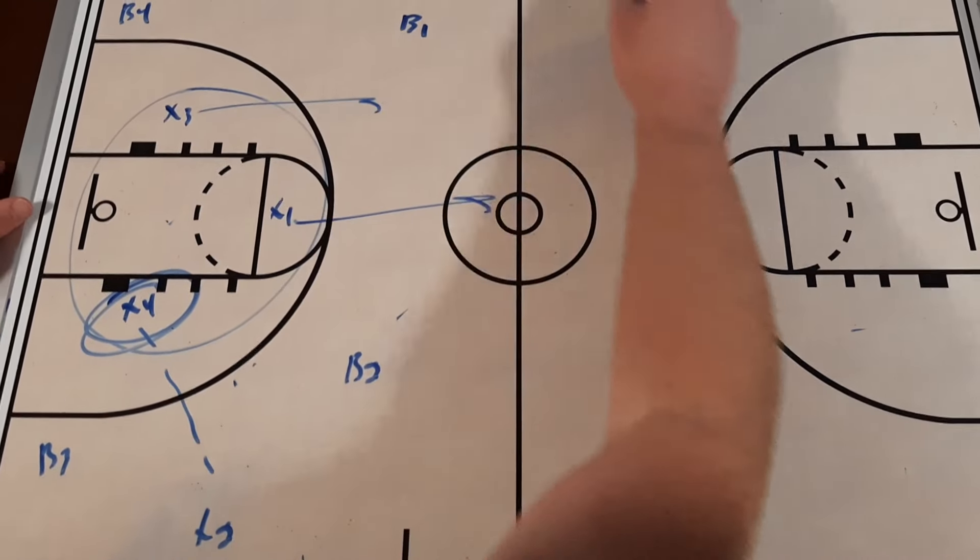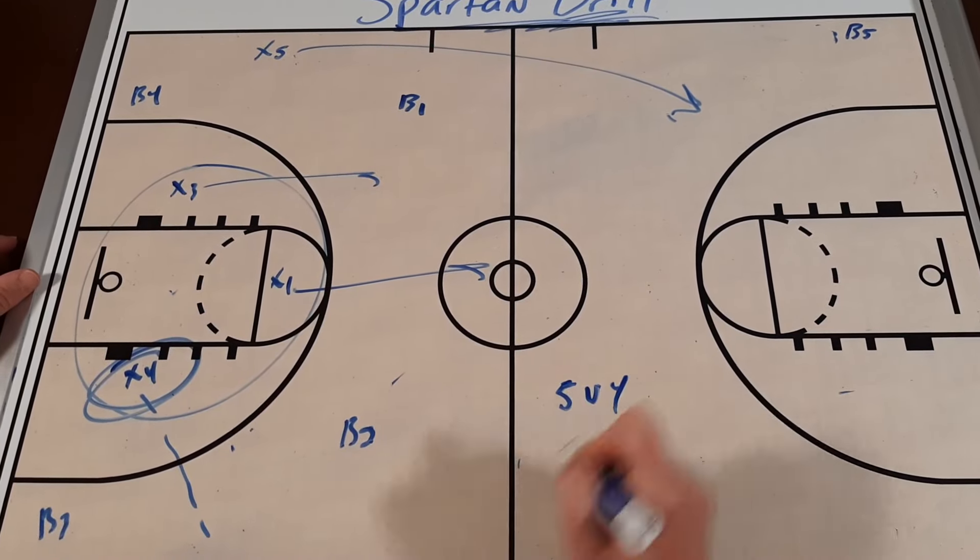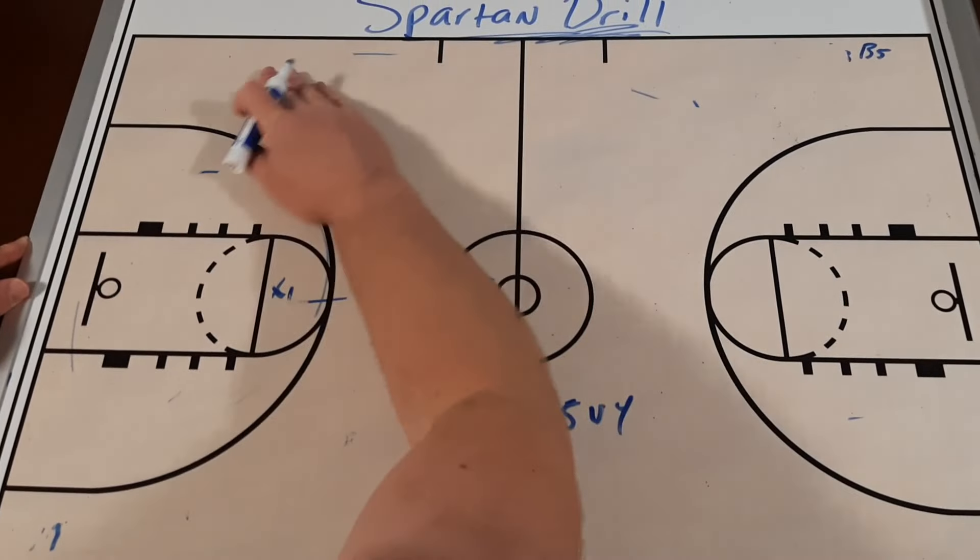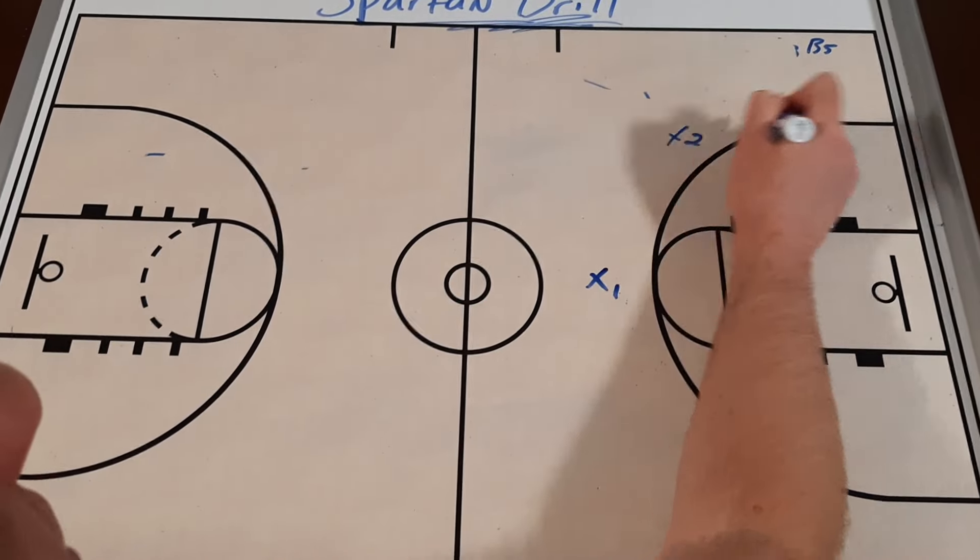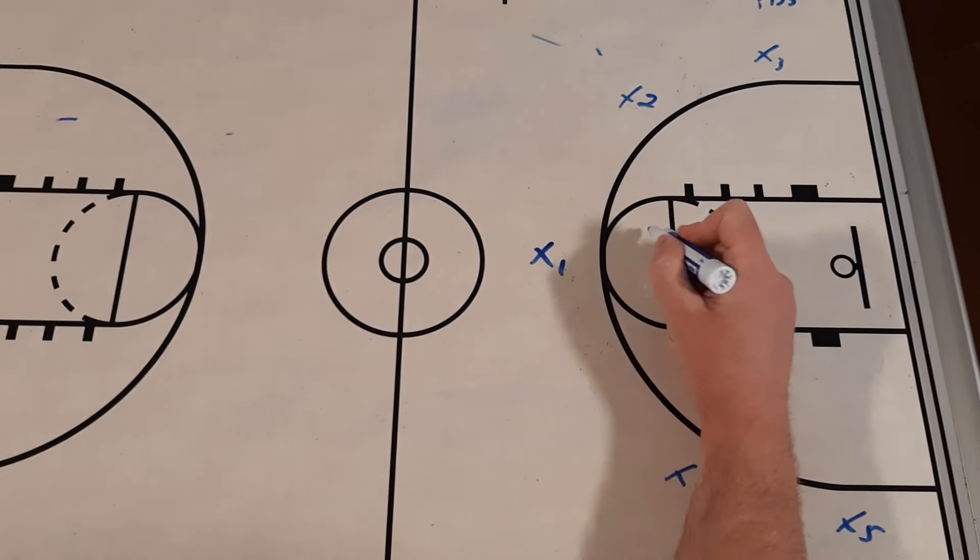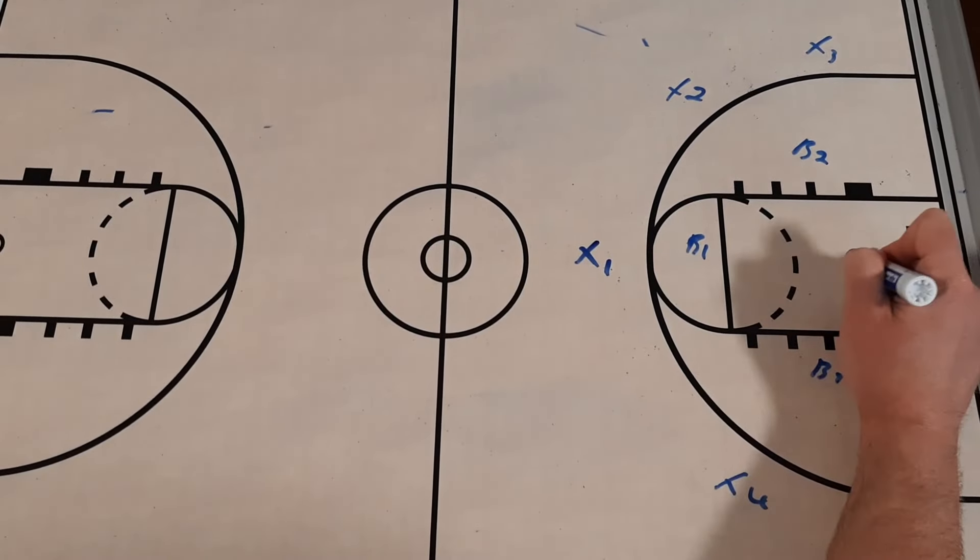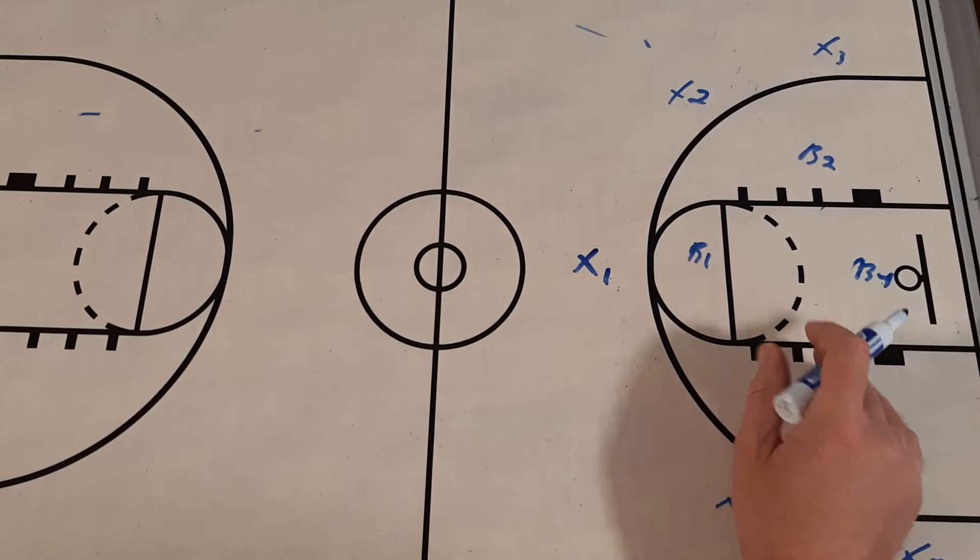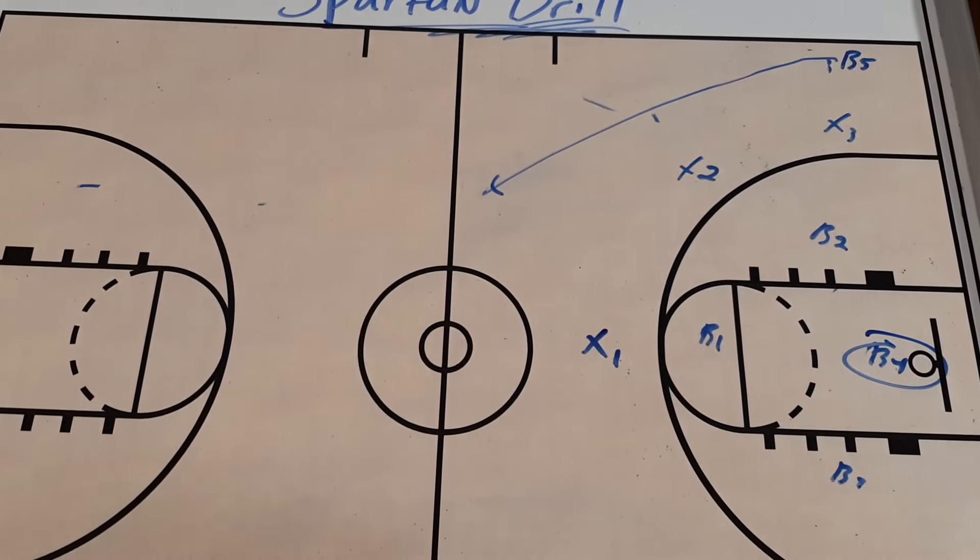Let's say X4 gets the rebound. They can outlet to X2. X1 is running the floor, X3 is running the floor, X5 is running the floor. And now it becomes 5 vs 4. So we'll have our X1, X2, X3, X4, and X5 out there. And then your B1, B2, B3, and B4. And however you like them to set up defensively. But it becomes a 5 on 4.